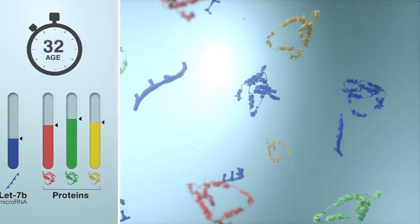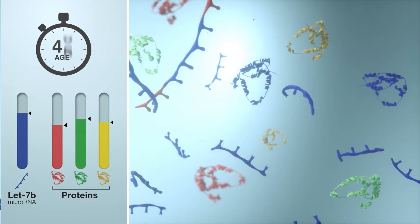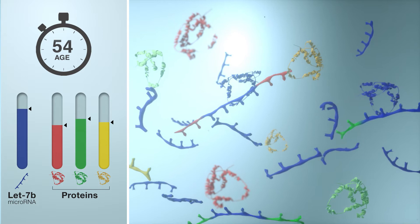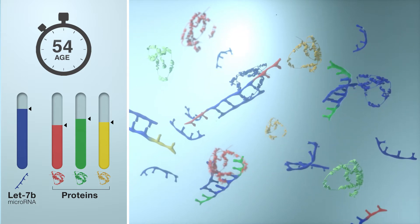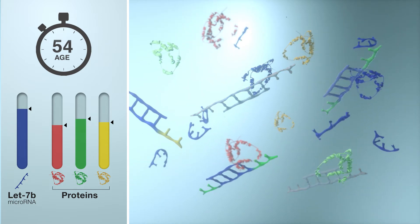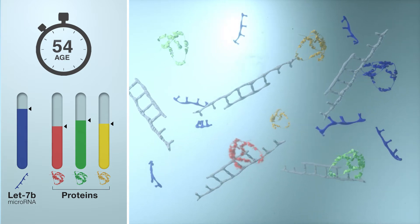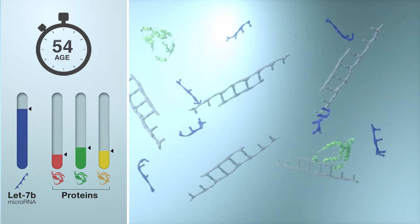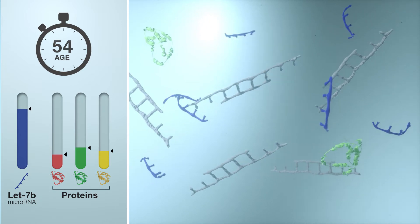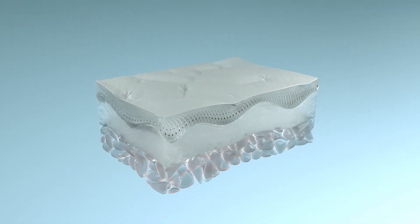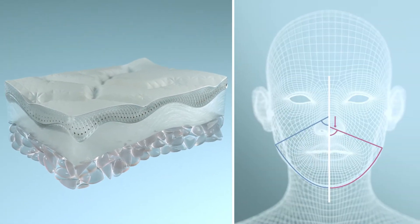However, this well-balanced process starts malfunctioning with age. MicroRNAs end up accumulating and neutralizing too many mRNAs. The production of proteins decreases, cells suffer from the underproduction of structuring elements, skin caves in, and loses density, causing facial sagging.